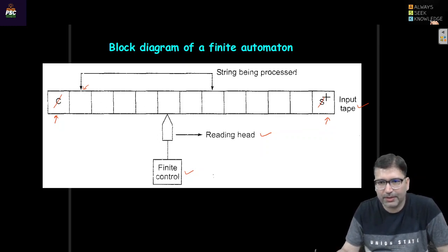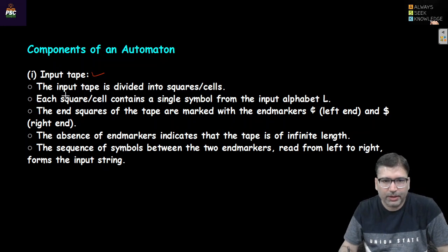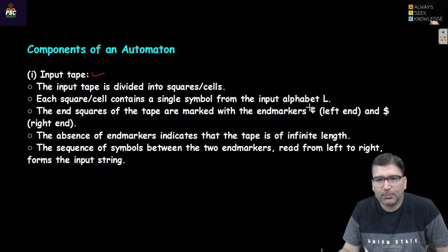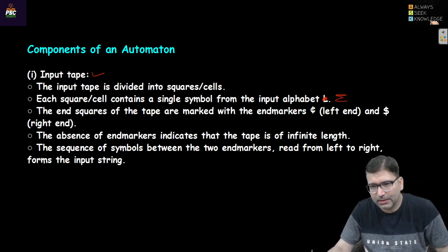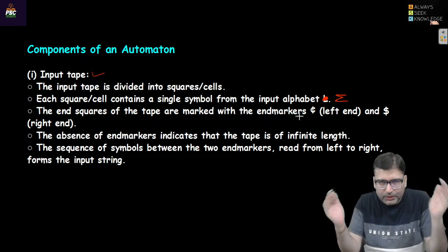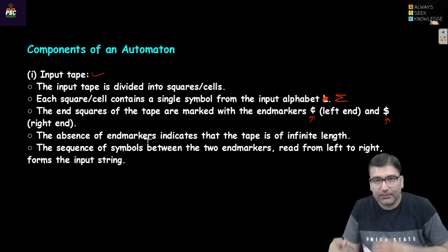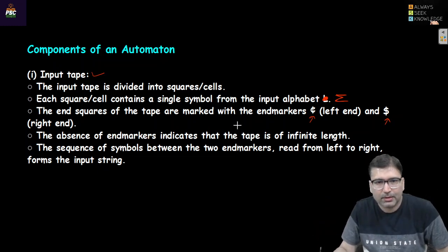Any two distinct symbols can be used as end markers — generally a dollar sign for the right end and something like 'c' for the left end. The input tape is divided into squares or cells; each square contains a single symbol from the input alphabet Σ. The end squares of the tape are marked with end markers. If there is no end mark, the input tape is considered to have infinite length.